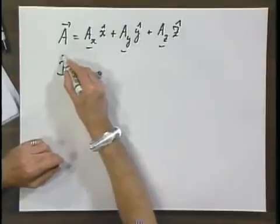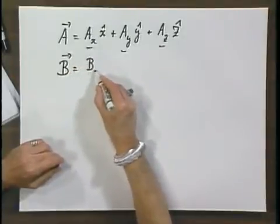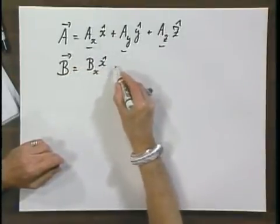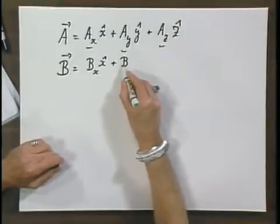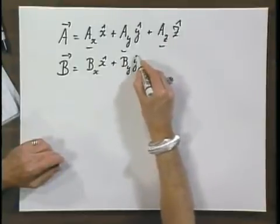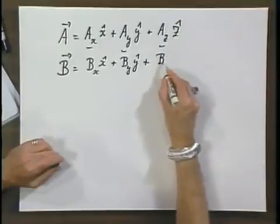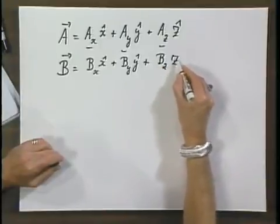And I have another vector B: B of x, x roof, plus B of y, y roof, plus B of z, z roof.